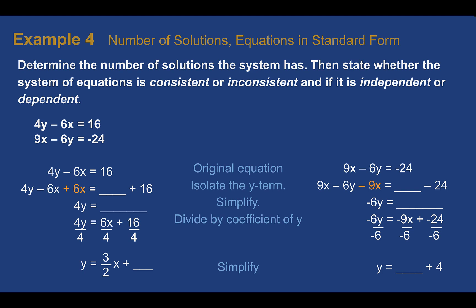Example four: number of solutions — equations in standard form. Determine the number of solutions the system has. The quickest way to tell if your graphs are going to intersect is to convert them to slope-intercept form so you can check the slopes. We can't necessarily tell right away, so let's change them. Solving the first equation for y: add 6x to both sides to get 6x plus 16, then divide both sides by 4, ending up with y equals three-halves x plus 4.